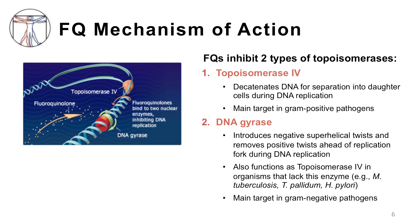At a very basic level, all fluoroquinolones block DNA replication and synthesis by binding to bacterial enzymes involved in DNA supercoiling, called topoisomerases. There are two main types of topoisomerases: topoisomerase IV and DNA gyrase. Topoisomerase IV is the main target in gram-positive pathogens, which decatenates DNA for separation into daughter cells during DNA replication. DNA gyrase appears to be the primary fluoroquinolone target in gram-negative bacteria, introducing negative superhelical twists and removing positive twists ahead of the replication fork, as depicted in the cartoon.